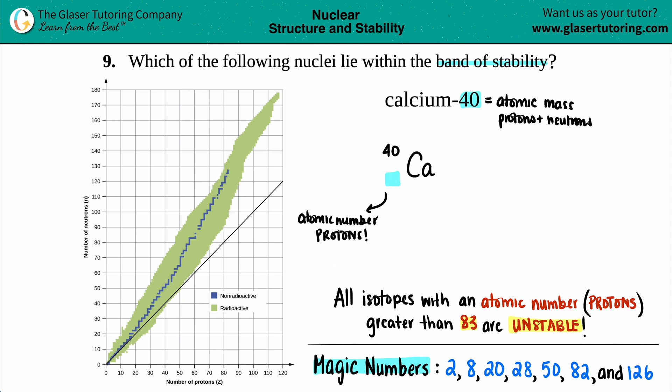Every number for an atomic number is unique to an element. And if I look on my periodic table, I see that calcium has a number 20. So we definitely know that we have 20 protons.